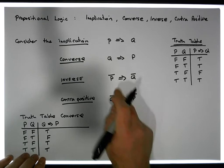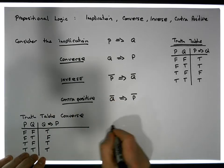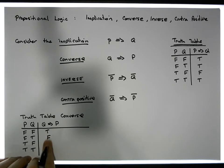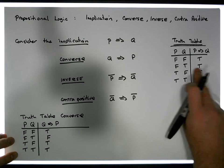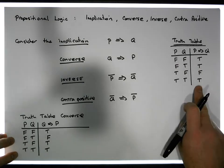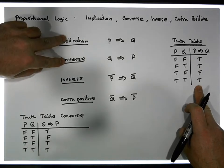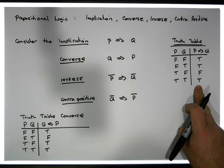Let's build a truth table now for the inverse. What we can see is that the truth table for the converse — the outputs on all the possible inputs — are different to the original truth table. So what we know now is that the converse and the original implication are not logically equivalent; they are two different types of arguments.